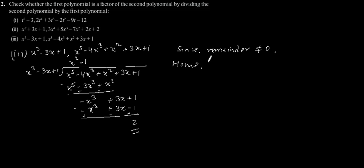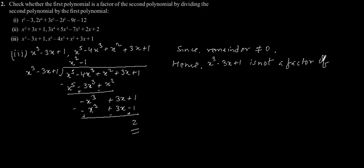Since the remainder is not equal to 0, hence x cubed minus 3x plus 1 is not a factor of x to the power 5 minus 4x cubed plus x squared plus 3x plus 1.